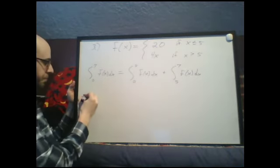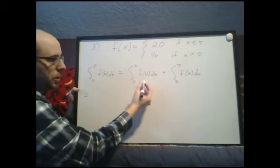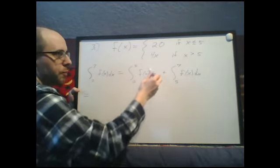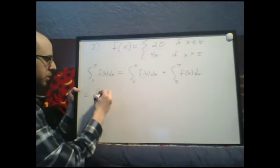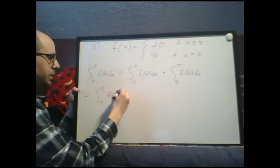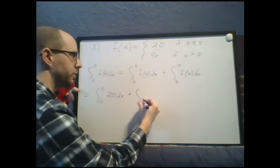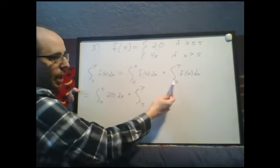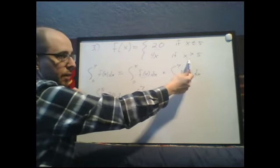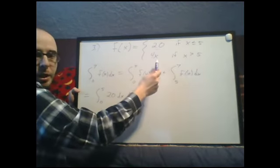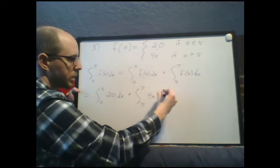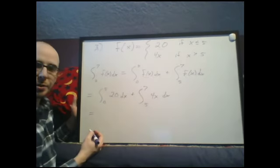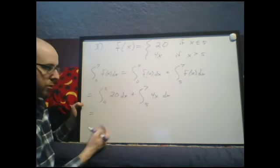So I write this as a sum of two integrals. But now the point is, in this first integral, x is definitely between 0 and 5. So my formula for f of x will be 20. So the integral from 0 to 5 of 20 dx, plus the integral from 5 to 7. And on this integral, x is definitely between 5 and 7. So that's definitely in this second case where the function is 4x. So we integrate 4x dx from 5 to 7. So now we do these two integrals and compute both of them and add them together.